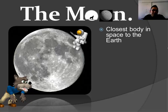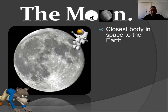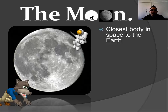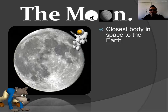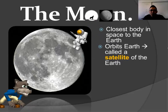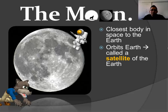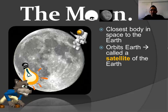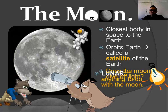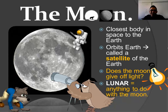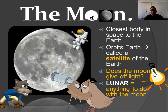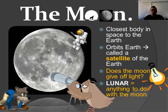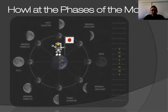The moon is very famous — lots of images, lots of stories, including tales about werewolves. The moon is the closest body in space to the Earth and it orbits Earth, so we call it a satellite. Man-made satellites also orbit the Earth but they're man-made. By now you should know the moon does not give off any light. The word 'lunar' means anything to do with the moon — some people follow a lunar calendar, tracking how the moon changes to determine dates.